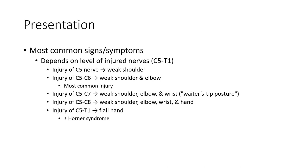Most common signs and symptoms depend on the level of injury and nerve roots C5 to T1. Injury C5 to C6 leading to weak shoulder and elbow. Injury C5-6, leading to weak shoulder or elbow. Injury of C5-7: weak shoulder, elbow, and wrist, with a typical posture.